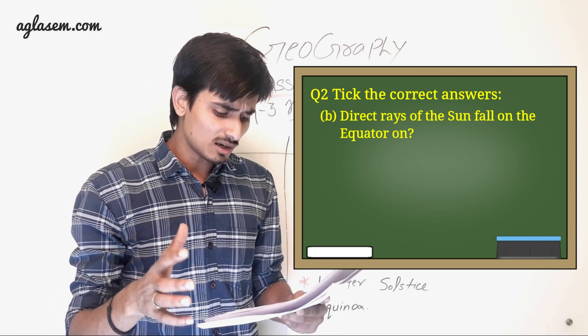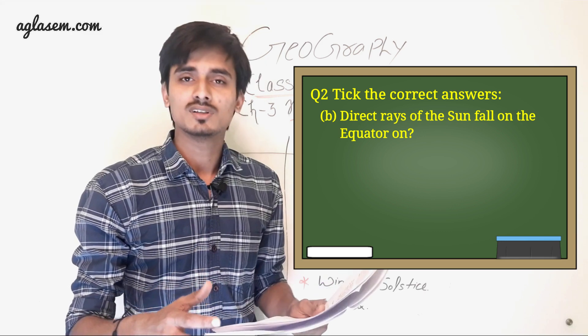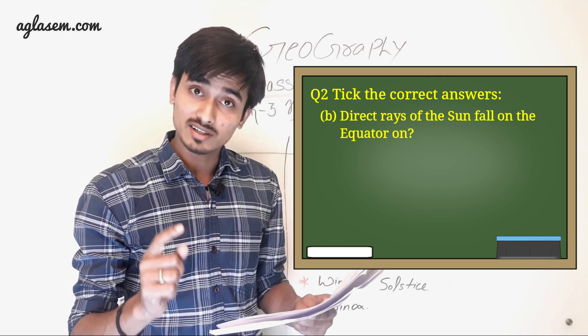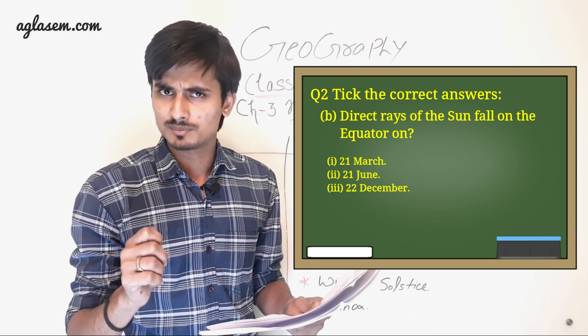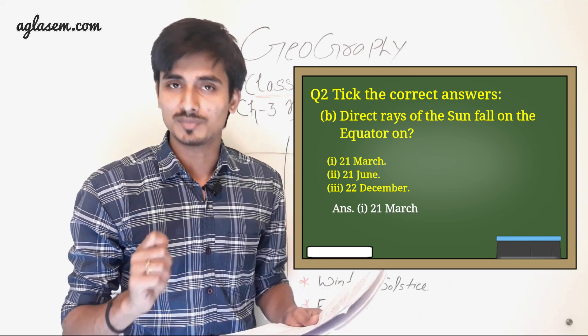B. Direct rays of the Sun fall on the equator on. Options are: First, 21st March. Second, 21st June. And third, 22nd December. So answer is 21st March.